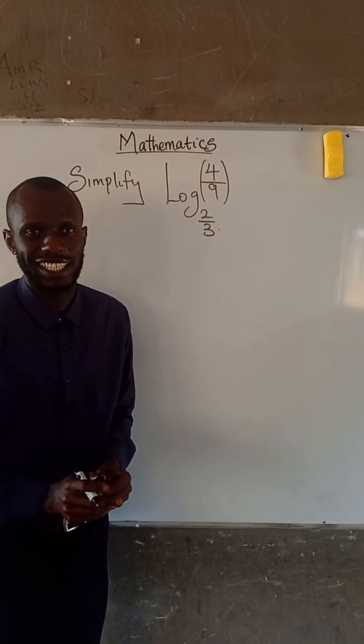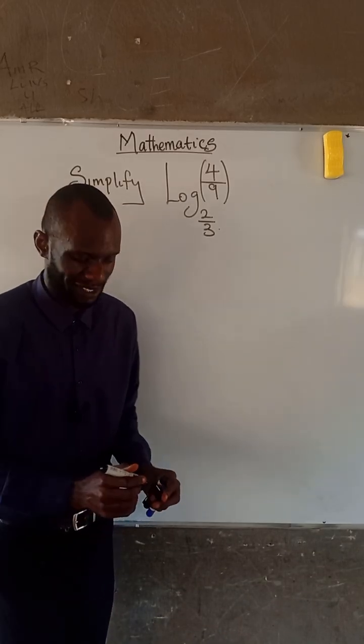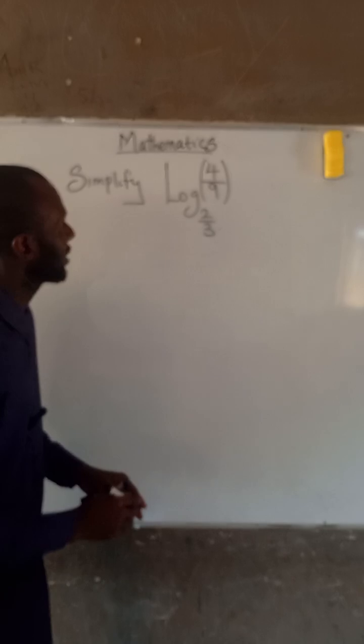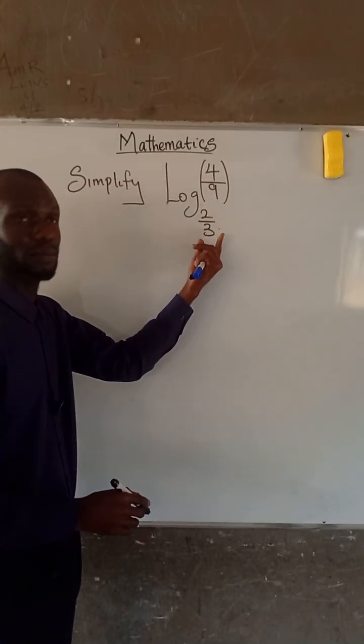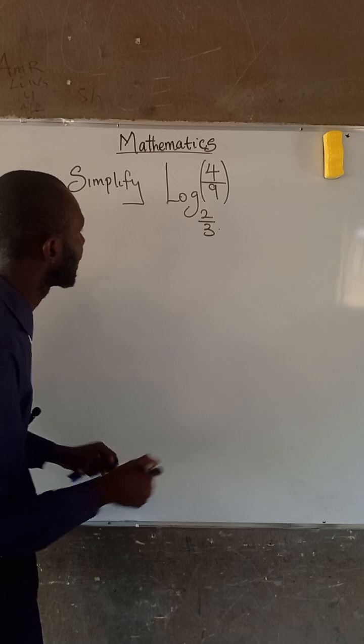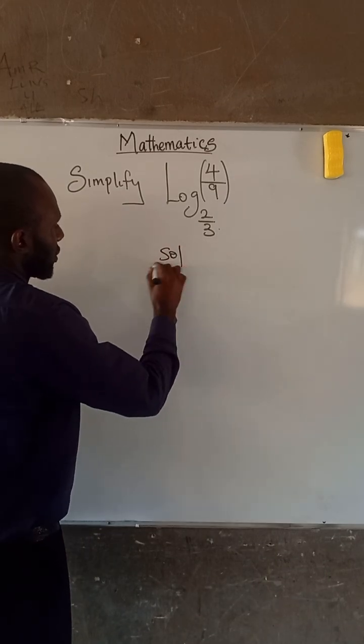Hello everyone, welcome to Radiant Minds Academy. We are given to simplify log of 4 divided by 9 in base 2 divided by 3. So let's do that.